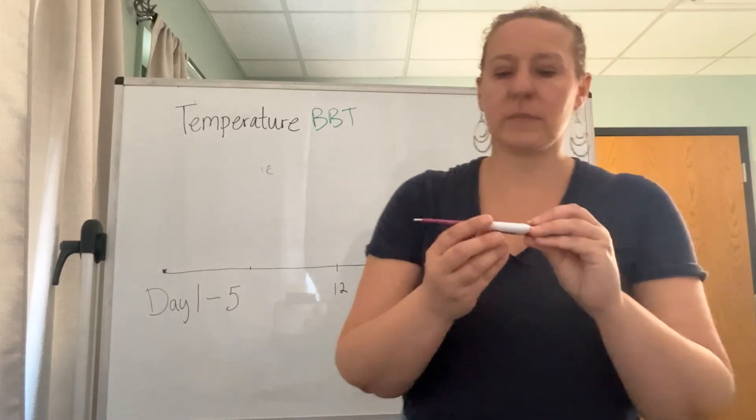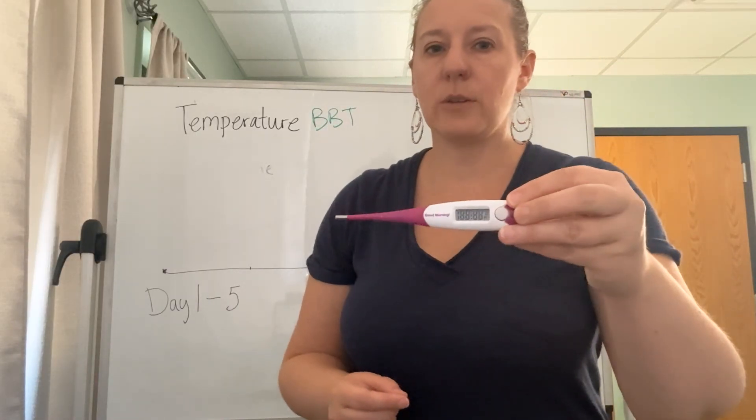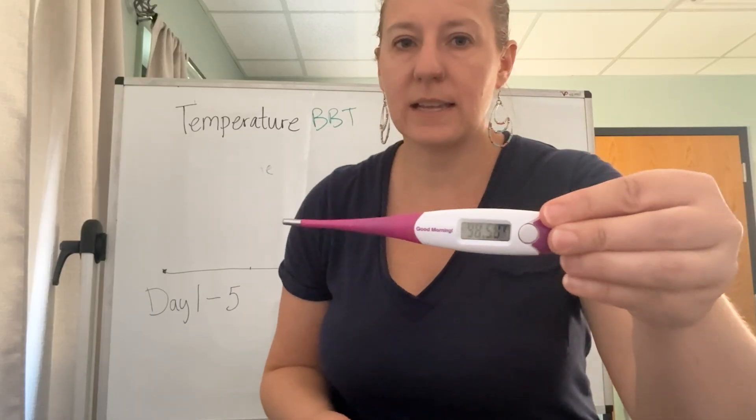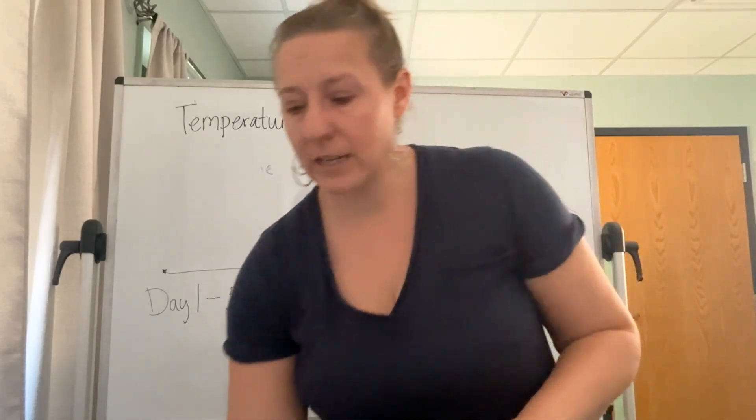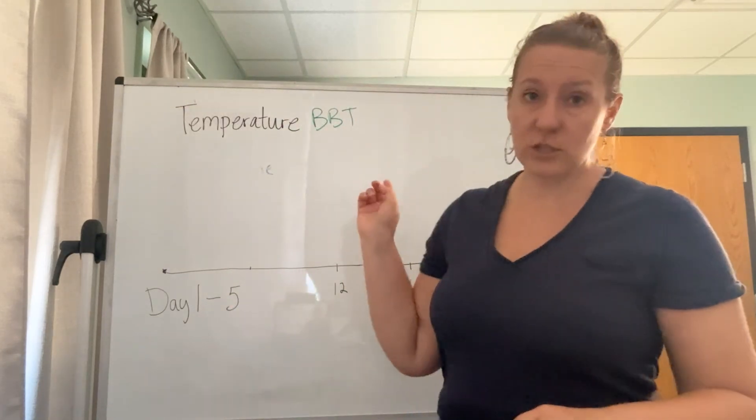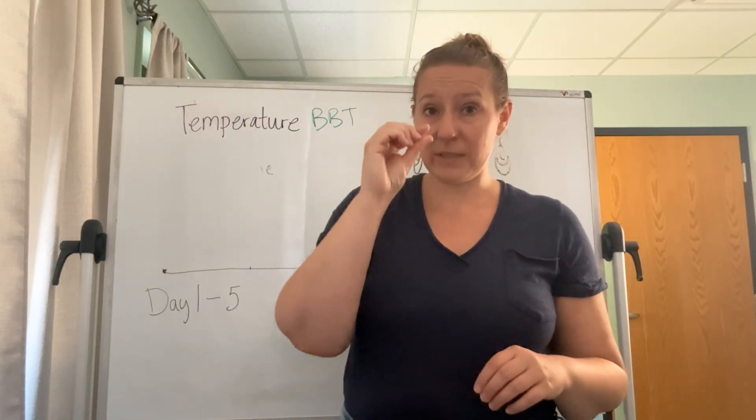Here's an example of a BBT thermometer. What you want is one that measures to the hundredth of a degree. We need it accurate because your temperature changes throughout your cycle in little increments.